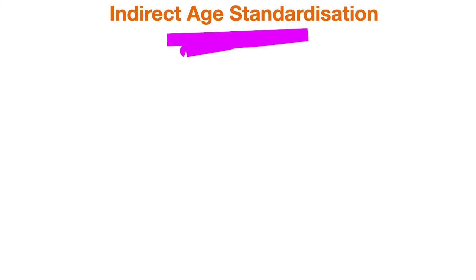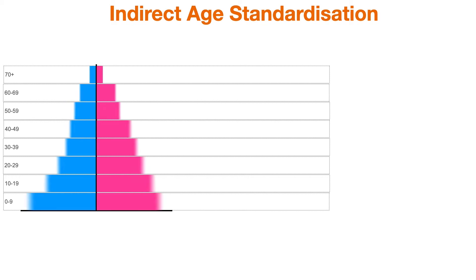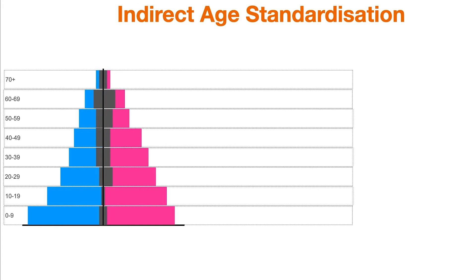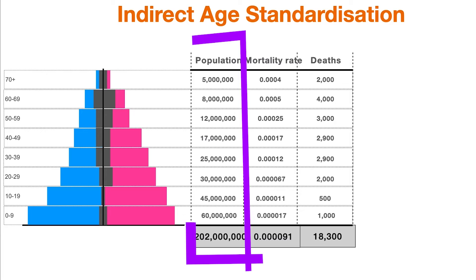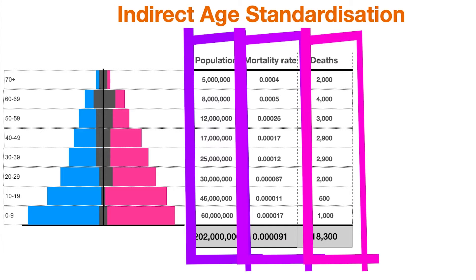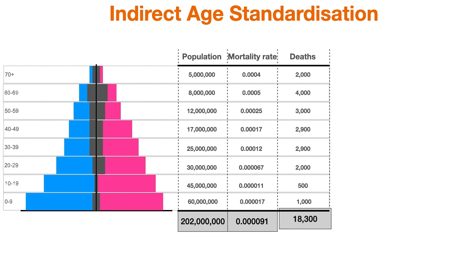We're going to start with indirect age standardization. Let's imagine we're looking at a country — maybe a country like Ireland. This is a population pyramid where men are represented in blue and women are represented in pink for each age strata. The gray is the proportion of the people in each age strata that die — that's our mortality rate. We've got a population size, a mortality rate in Ireland, and a number of deaths for each age strata.